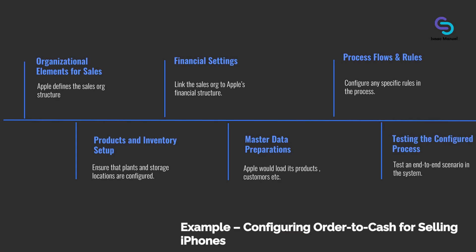And then testing the configured process: Apple's team would test an end-to-end scenario in the system. Create a sales order for 100 iPhones by an Apple Store using sales org US01, channel RET, confirm it, create a delivery, post goods issue, then invoice. If all the configuration was done correctly, each step will go through. If something is missing, the test will fail. For example, if Apple forgot to set up a tax code for a certain state, the billing might give an error. The team can then quickly go back to CBC and enter any missing config values.